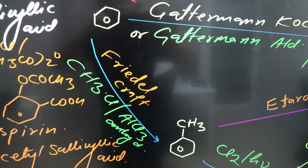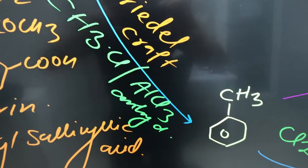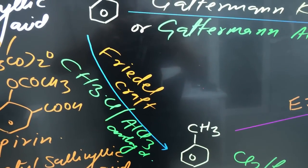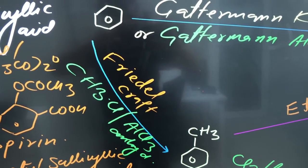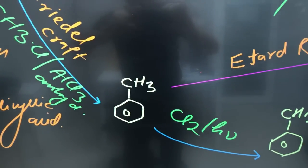If you react benzene with methyl chloride in presence of anhydrous aluminum chloride, this reaction is known as, dear kids, Friedel Craft reaction. So benzene will convert into toluene.